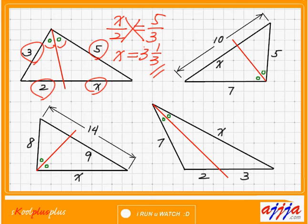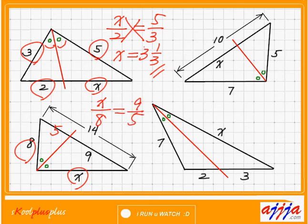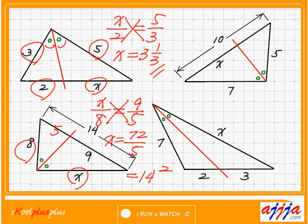What about the left-hand side bottom? This was total 14, this one is 9, so that means this is going to be 5, right? Now we can make the ratio: X to 8 equals 9 to 5. Cross multiplication: 5X is 72. That means X equals 72 divided by 5, which is 14 and 2-fifths, or 14.4.